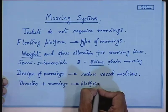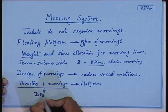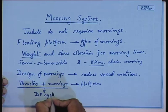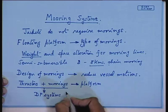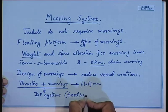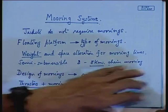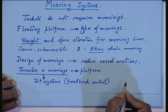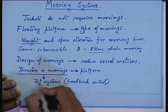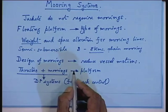The total system of thrusters plus mooring is called a DP system — that is, Dynamic Positioning system. The whole thing is controlled from the bridge by means of feedback control, which is the job of electronics or electrical engineering. The motions of the ship are fed to the controller and it automatically activates your DP system, that is your thrusters. The moorings are also connected to winches.